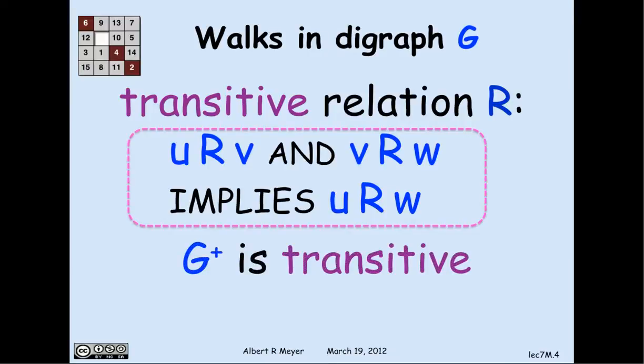The positive path relation of any graph G is transitive. Another way to say transitivity is to read u R v as saying there's an edge from u to v. Then transitivity says if there's an edge from u to v and an edge from v to w, there's an edge from u to w. In other words, if there's a path of length 2, there's a path of length 1. And by easy induction, if there's a path of any positive length between two vertices, there's in fact a path of length 1 — that is, an edge between them.